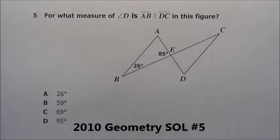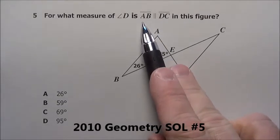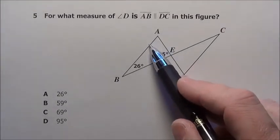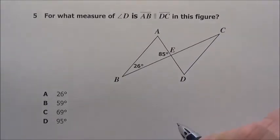Here's problem number 5. It says for what measure of angle D, this angle down here, is going to help prove that this line segment AB and this line segment DC are parallel.